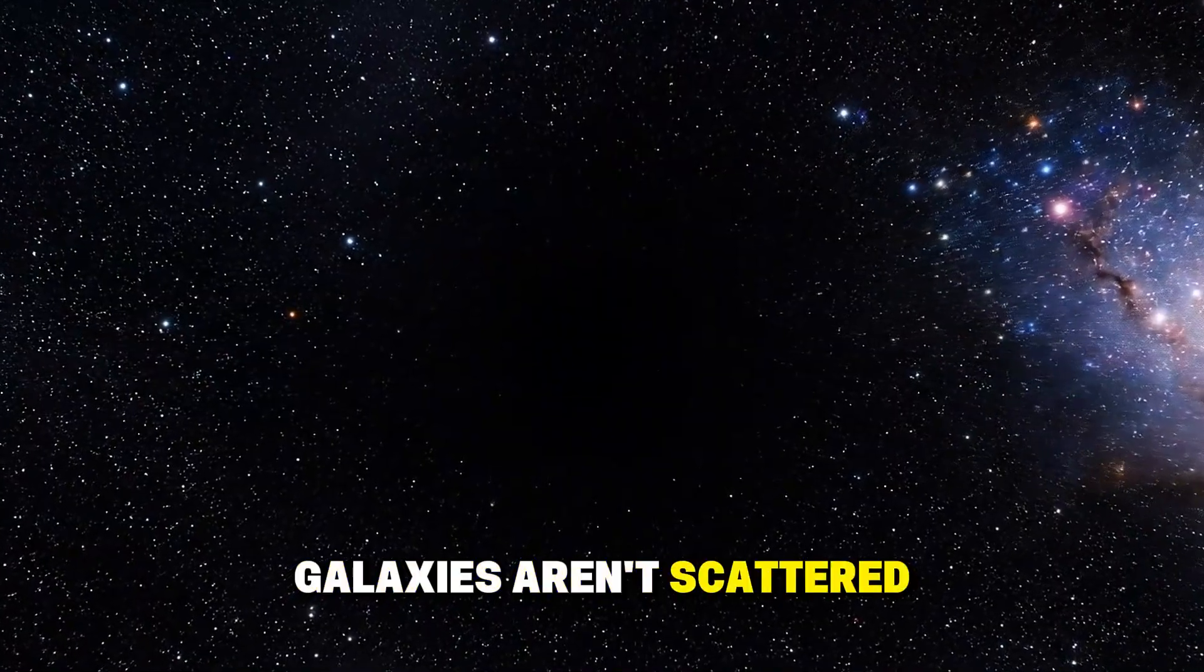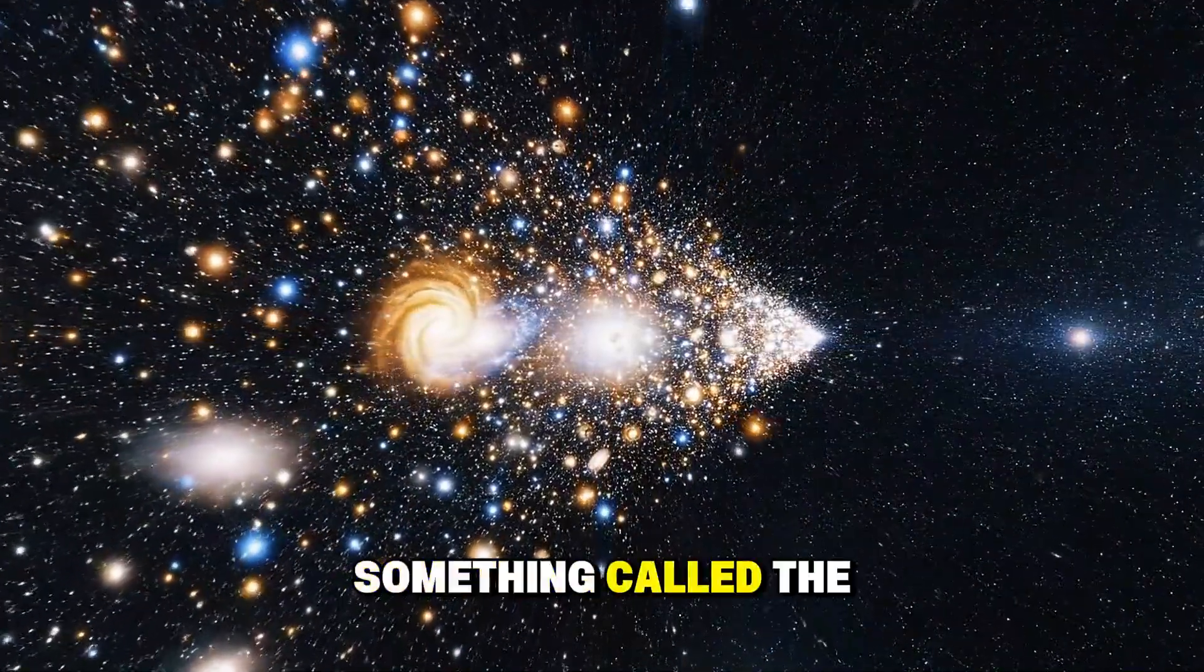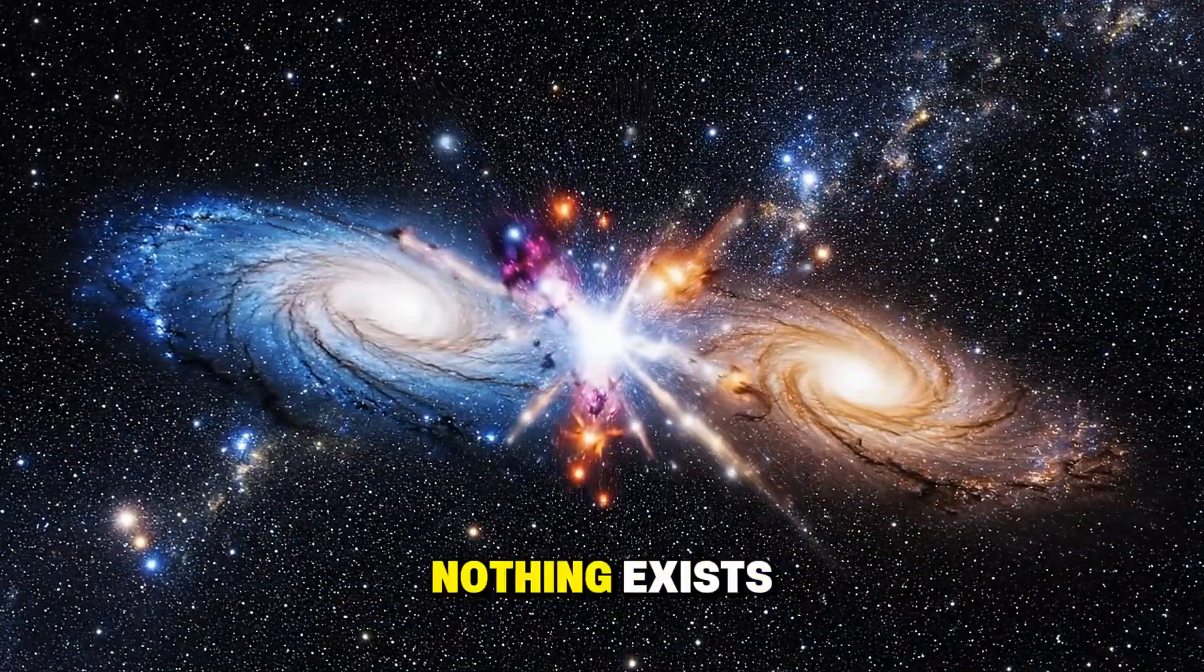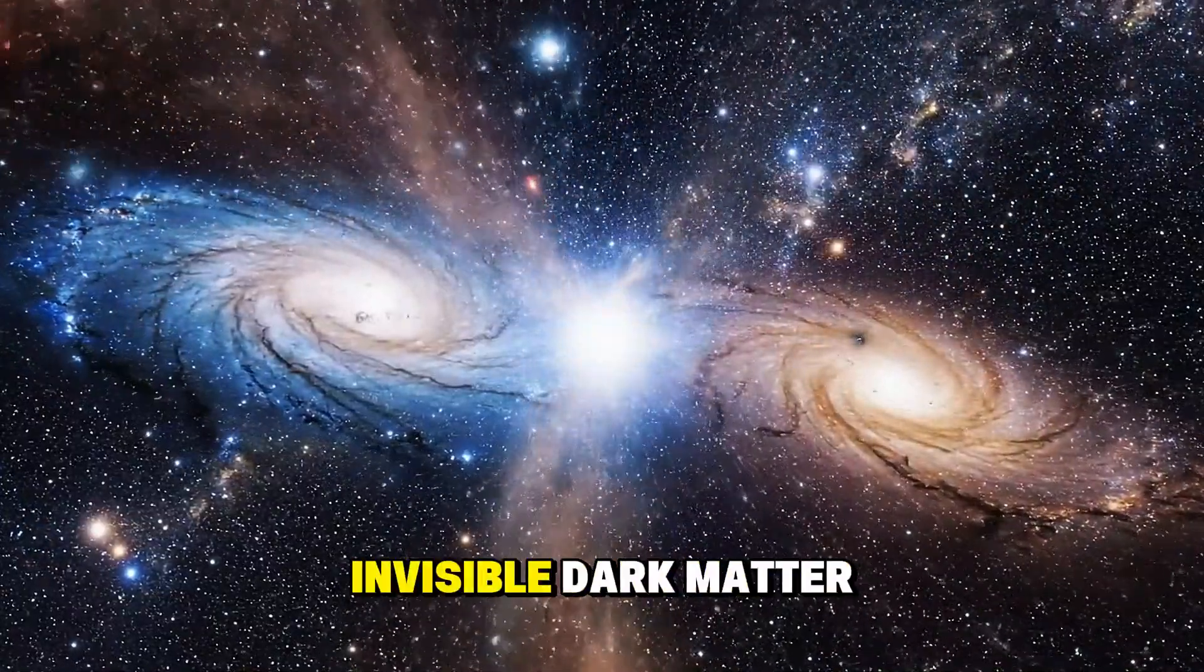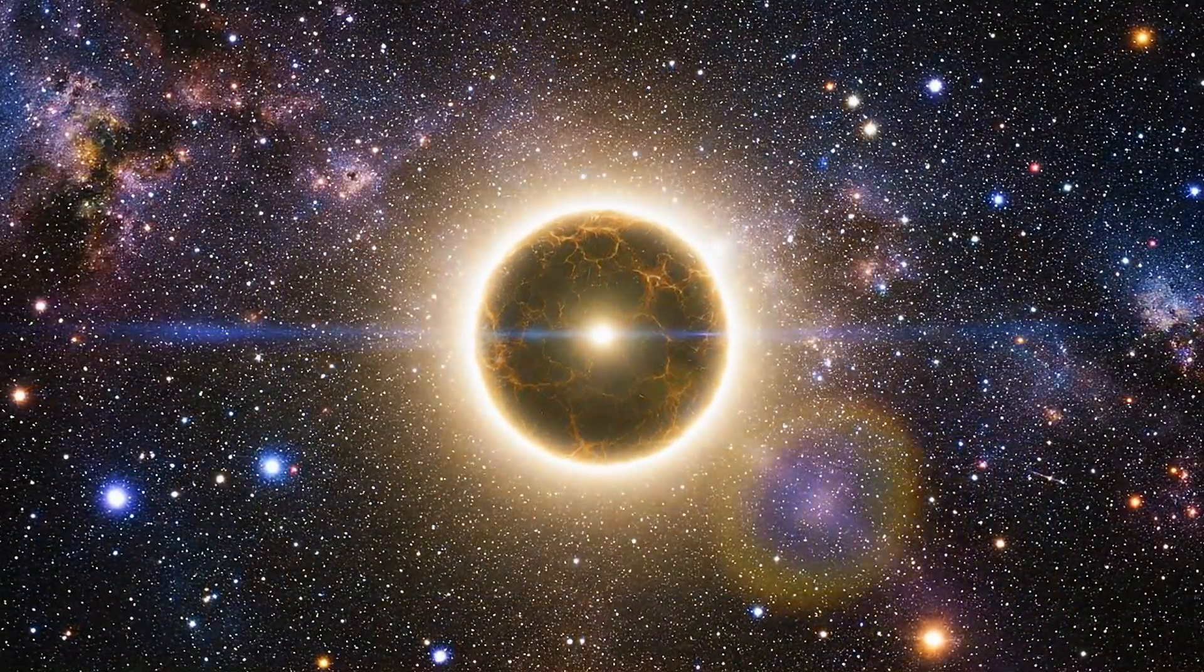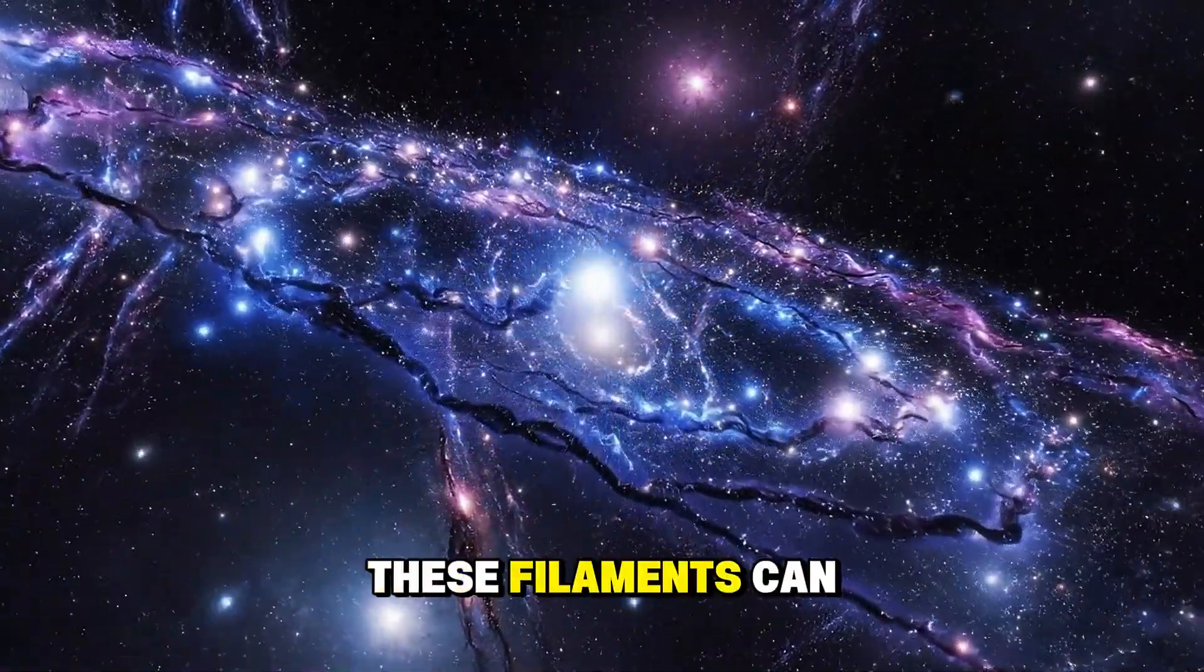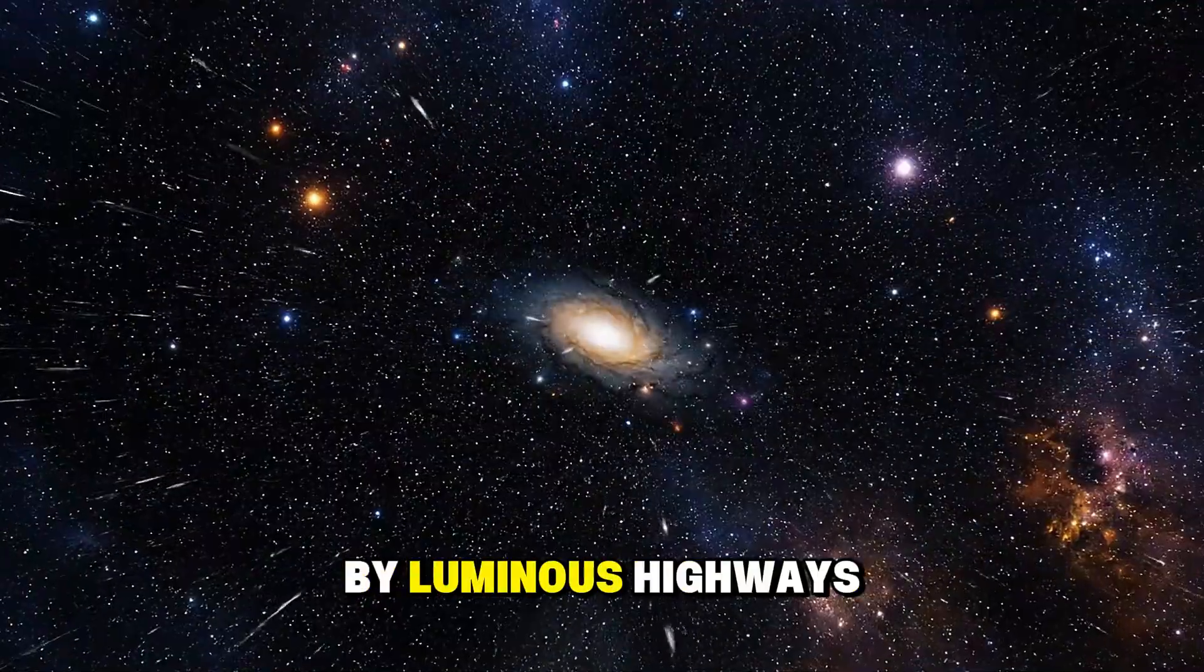Galaxies aren't scattered randomly through space like salt thrown across a table. Instead, they form something called the Cosmic Web, a universe-spanning structure of filaments, sheets, and walls, separated by enormous voids where almost nothing exists. Picture this: vast chains of galaxies connected by invisible dark matter filaments, creating a three-dimensional web that looks almost biological, like neurons in an impossibly vast brain, like the structure of a sponge magnified beyond comprehension. These filaments can stretch for hundreds of millions of light-years, connecting galaxy clusters like cities linked by luminous highways.